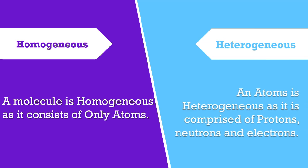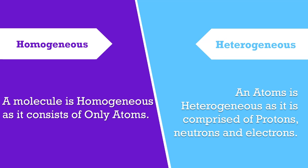A molecule is homogeneous as it consists of only atoms. An atom is heterogeneous as it is comprised of protons, neutrons, and electrons.